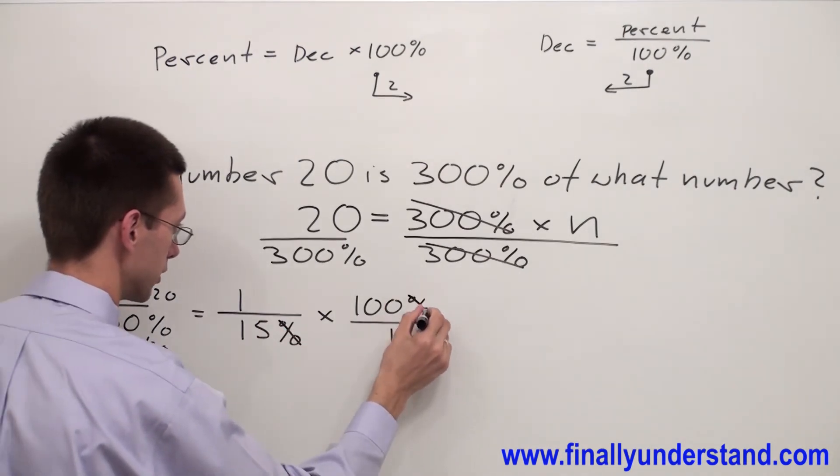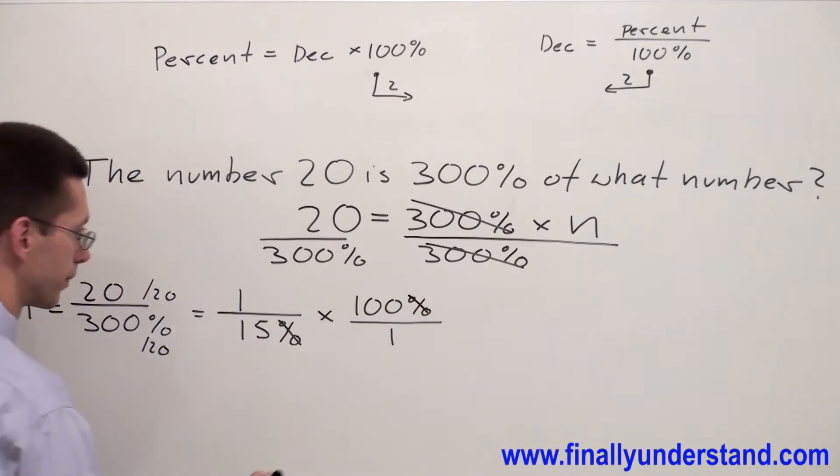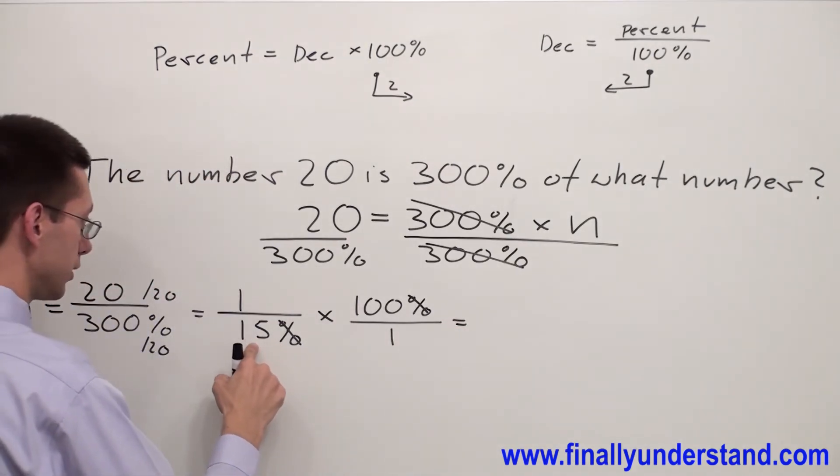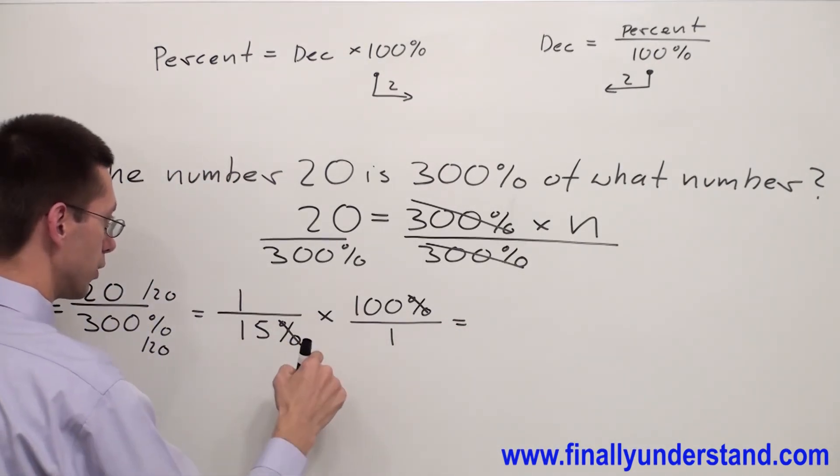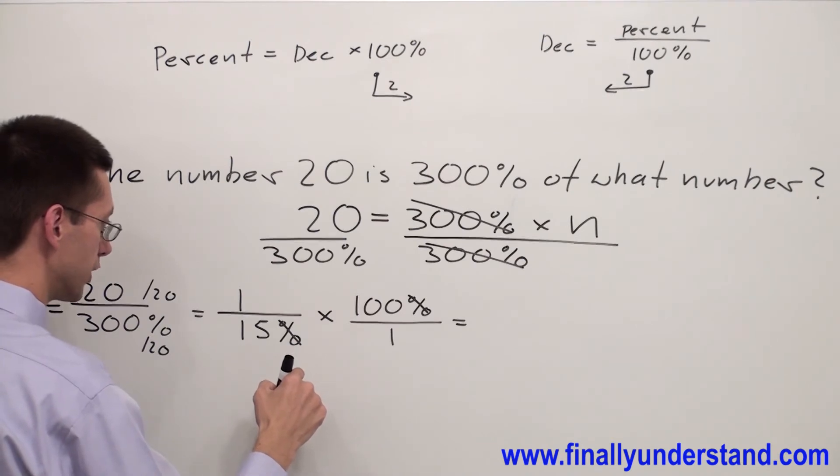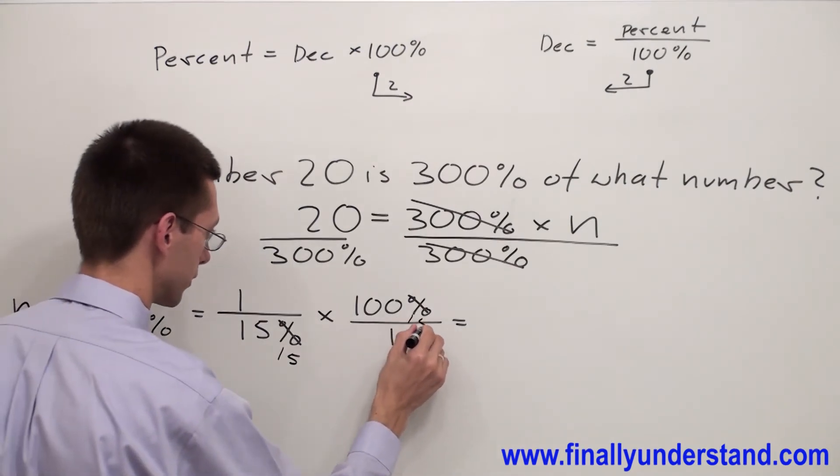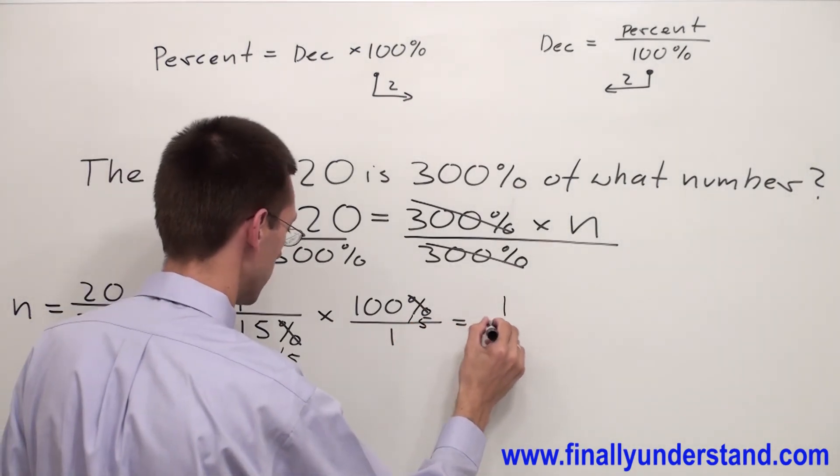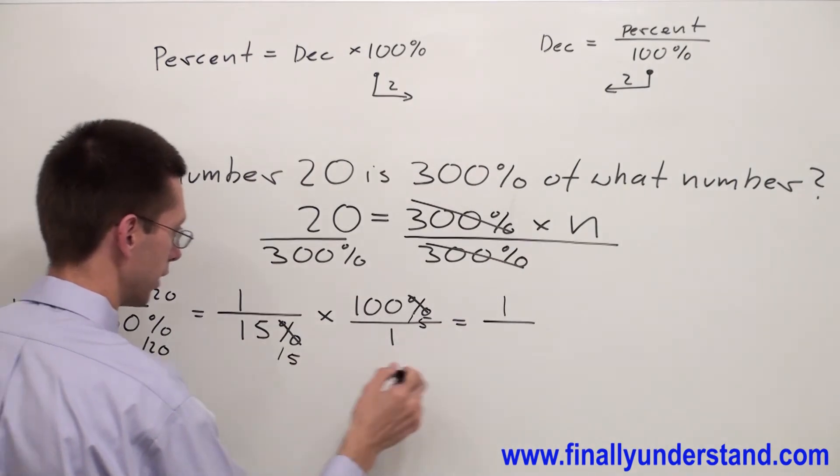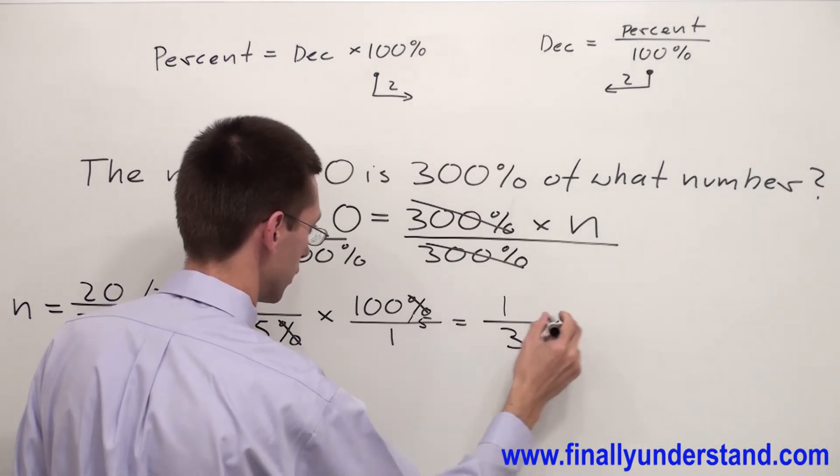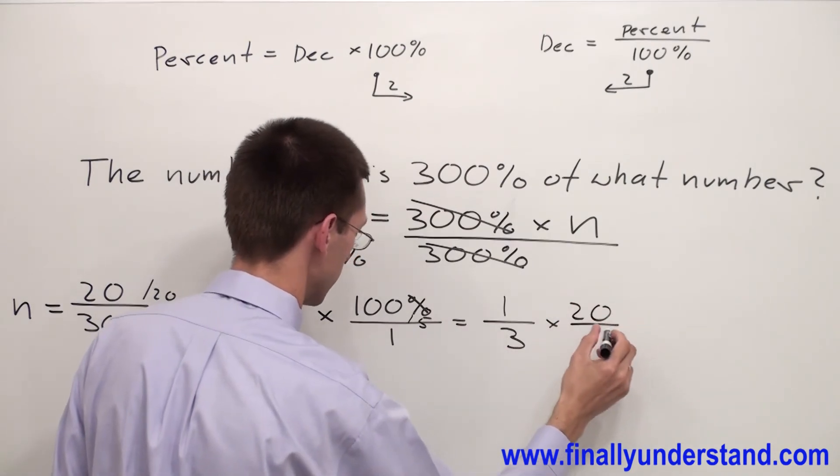Percent and percent will cancel out. Now 15 and 100 are both divisible by 5, so I'm going to divide them by 5. I have 1 over (15 divided by 5 is 3) times (100 divided by 5 is 20) divided by 1.